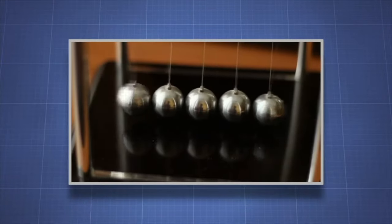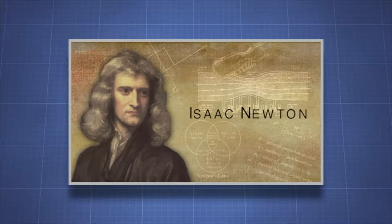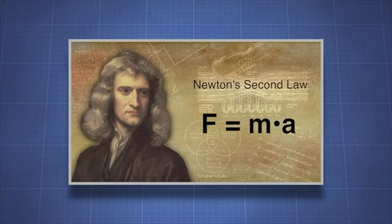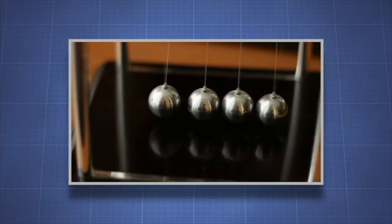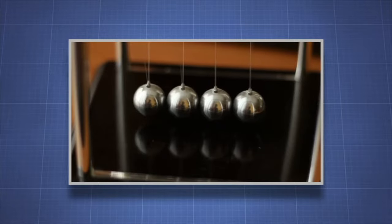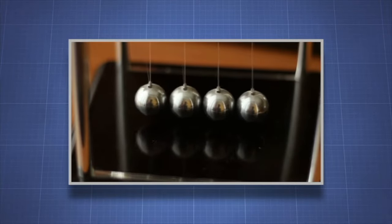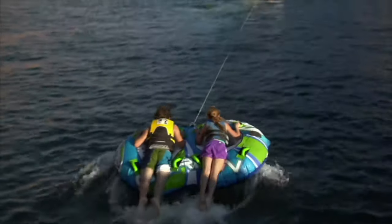Why do things move in certain ways? English mathematician and scientist Isaac Newton figured out the basic laws that govern how objects move. Newton's second law states that objects will accelerate only when an unbalanced force is acting upon it. An object will not accelerate unless a net force is applied. That's why Newton's second law is sometimes called the law of inertia.